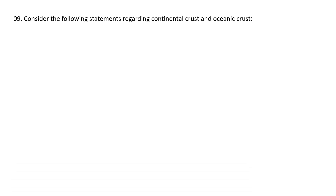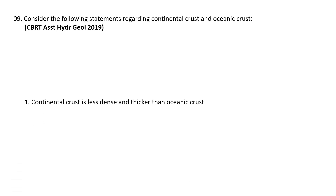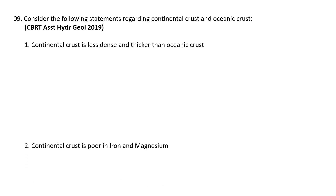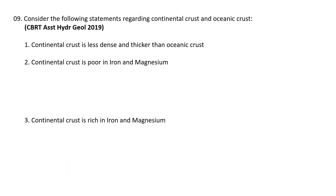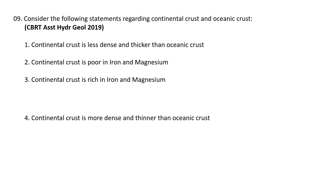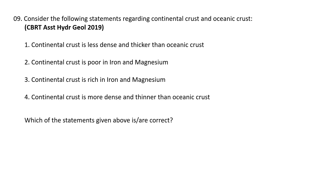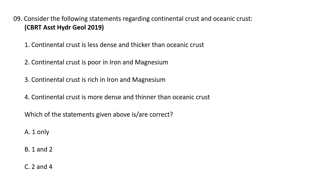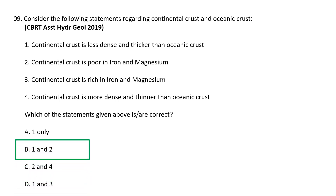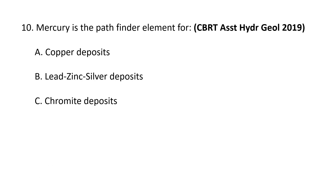Next question: consider the following statements regarding continental crust and oceanic crust. 1) Continental crust is less dense and thicker than the oceanic crust. 2) Continental crust is poor in iron and magnesium. 3) Continental crust is rich in iron and magnesium. 4) Continental crust is more dense and thinner than the oceanic crust. Which statements are correct? Both 1 and 2 are correct — continental crust is less dense, thicker, and poorer in iron and magnesium. B is the correct option.